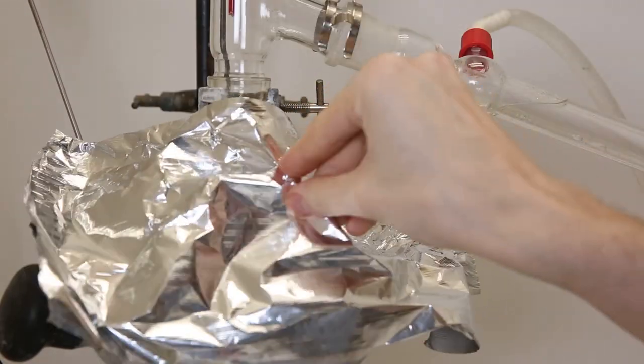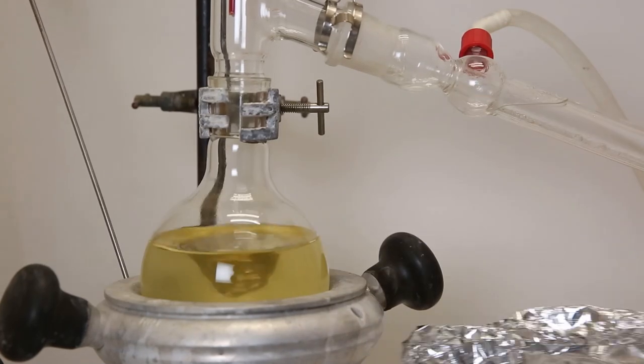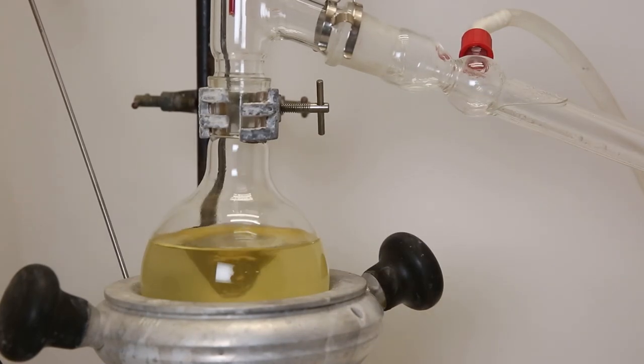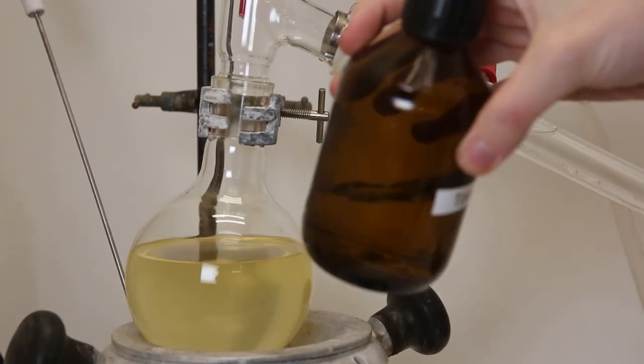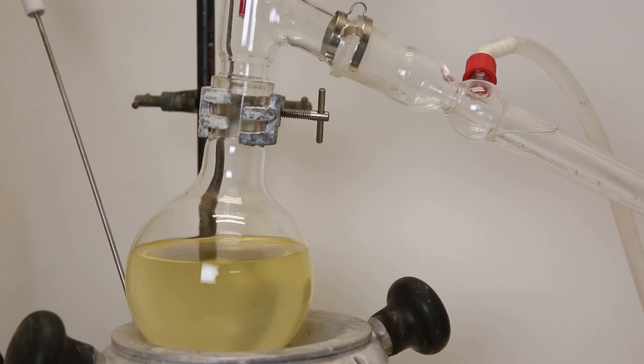After a while, I come back, and we can see that the volume has decreased a bit, and that it has turned more yellow, which is a good sign since biodiesel is supposed to be yellow. We can also see in the receiving flask that I collected a decent amount of toluene.